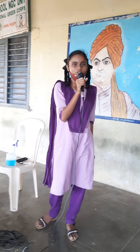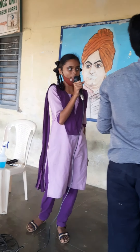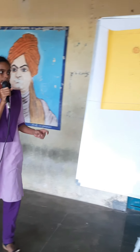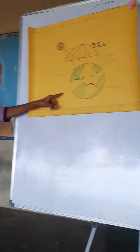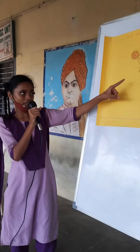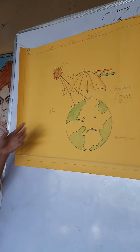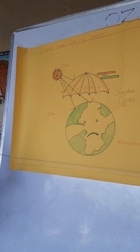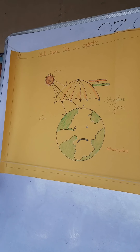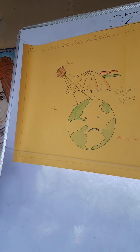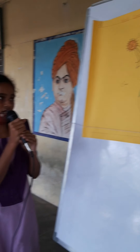The troposphere expands from the earth's surface up to 10 km. We are all living in the troposphere. The next layer is the stratosphere, which continues up to 10 km to 50 km. In this layer, most commercial airline traffic occurs.